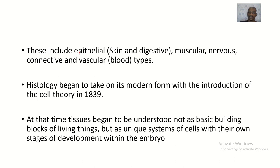The things Bichat discovered include epithelia of the skin and digestive system. He also described the muscular system, the nervous system, connective tissue, and vascular tissue types.